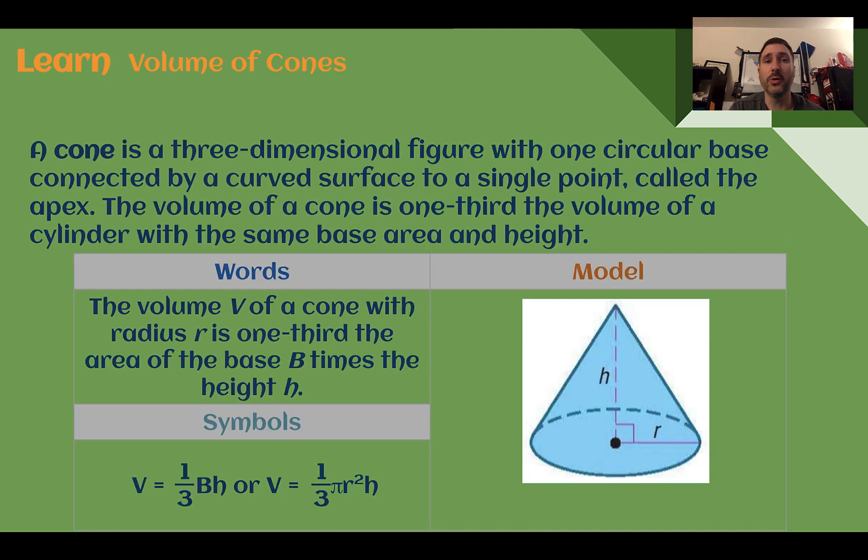A cone is a three-dimensional figure with one circular base connected by a curved surface to a single point called the apex. The volume of a cone is one-third the volume of a cylinder with the same base area and height.